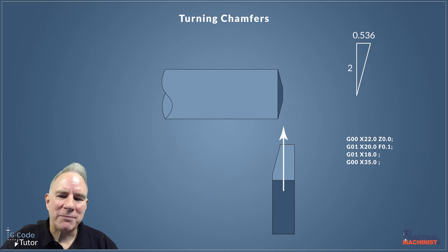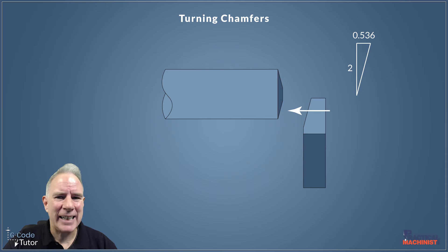So we would always come in the distance that was required for the depth of the chamfer if we're coming on the x-axis. The z-axis, not so much—we would change depending on the angle. So coming in on the z-axis, we would move in 0.536.